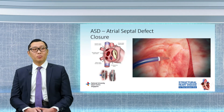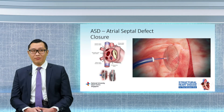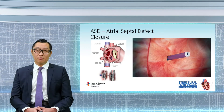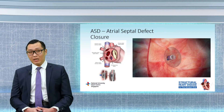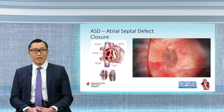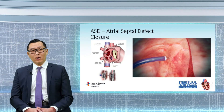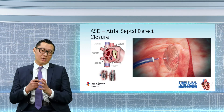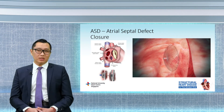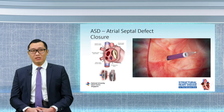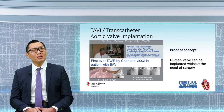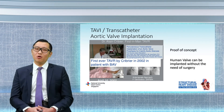Let's look at atrial septal defect as an example. Atrial septal defect is a condition where a patient is born with a hole in the heart, as you can see in the picture on the left. Nowadays, in the majority of cases, we can do a percutaneous treatment without the need for open heart surgery. We put the cardiac plug inside the catheter, cross the hole, and then deploy the plug to cover the hole on each side. This procedure usually takes about an hour — in most cases even less — and is very safe. The patient can go home the next day.